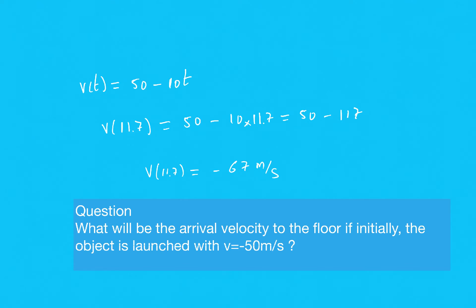Once you have t = 11.7 seconds, plug it into the equation for v(t) to obtain the velocity when the object hits the floor. The velocity is −67 meters per second. You can redo the problem to verify the calculations.